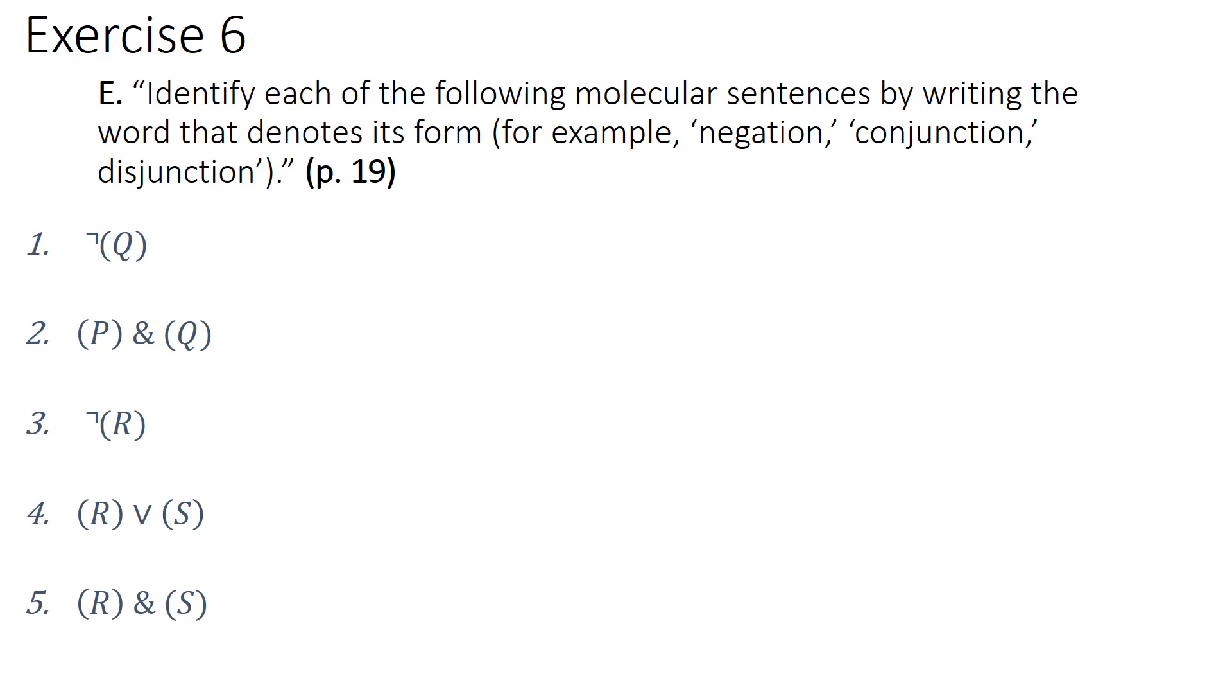Sentence 1, we have not Q, so we have a negation. Sentence 2, we have P and Q. It's definitely an and statement. We have the ampersand as the symbol, so it's a conjunction.